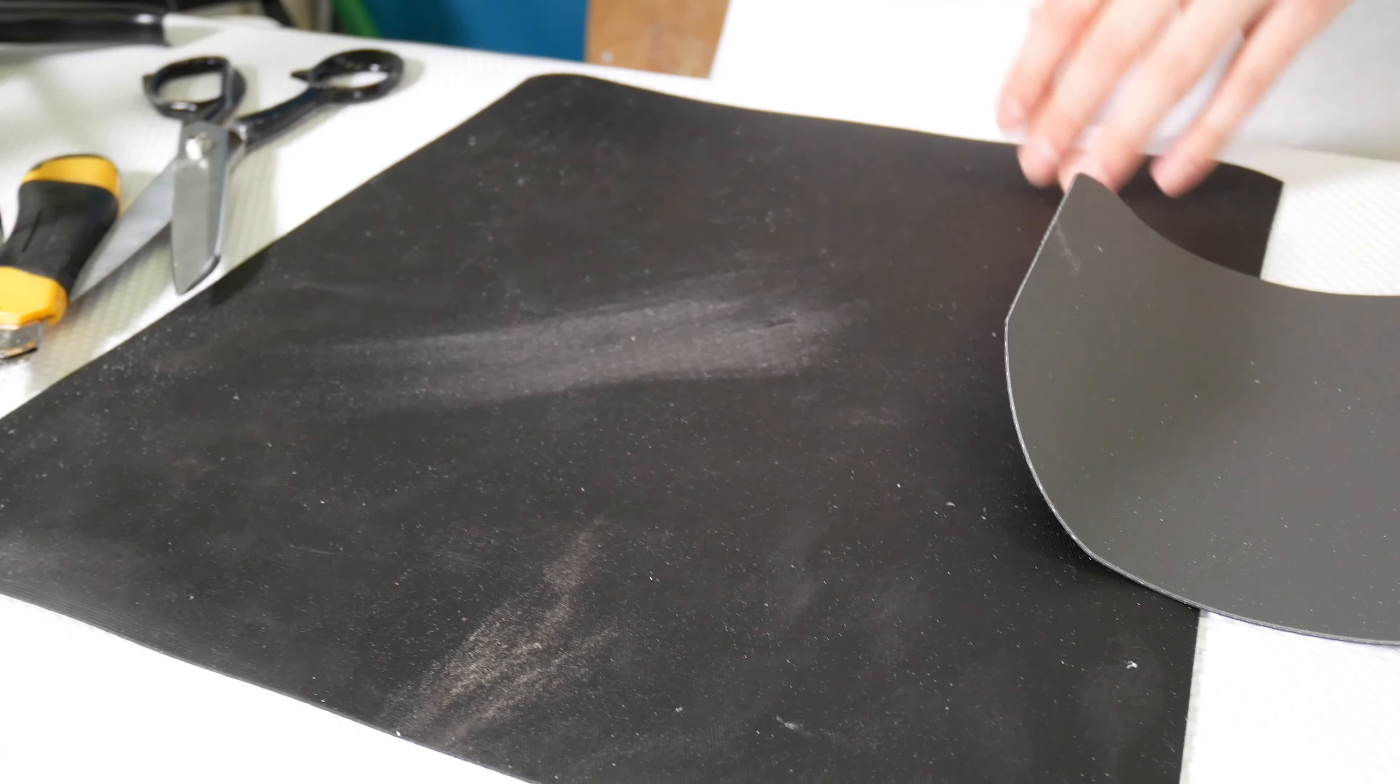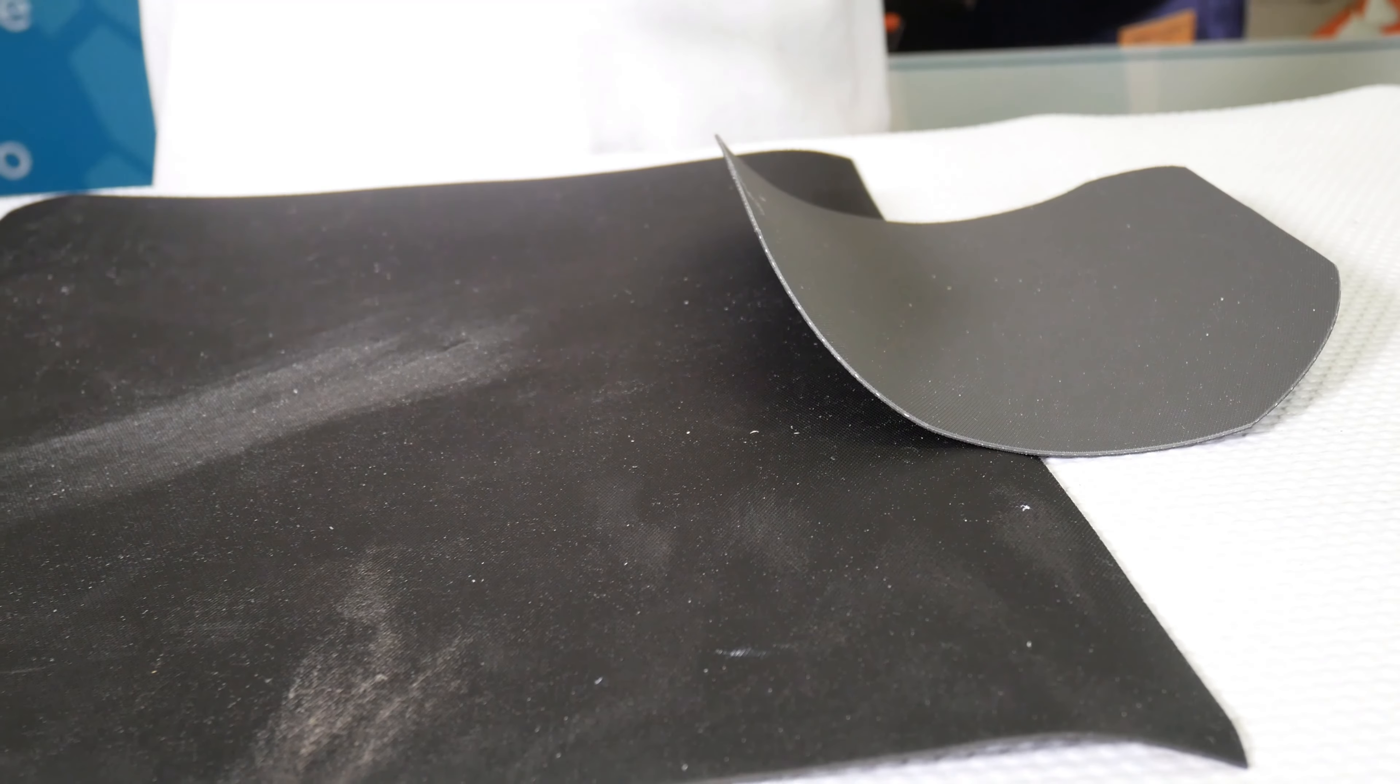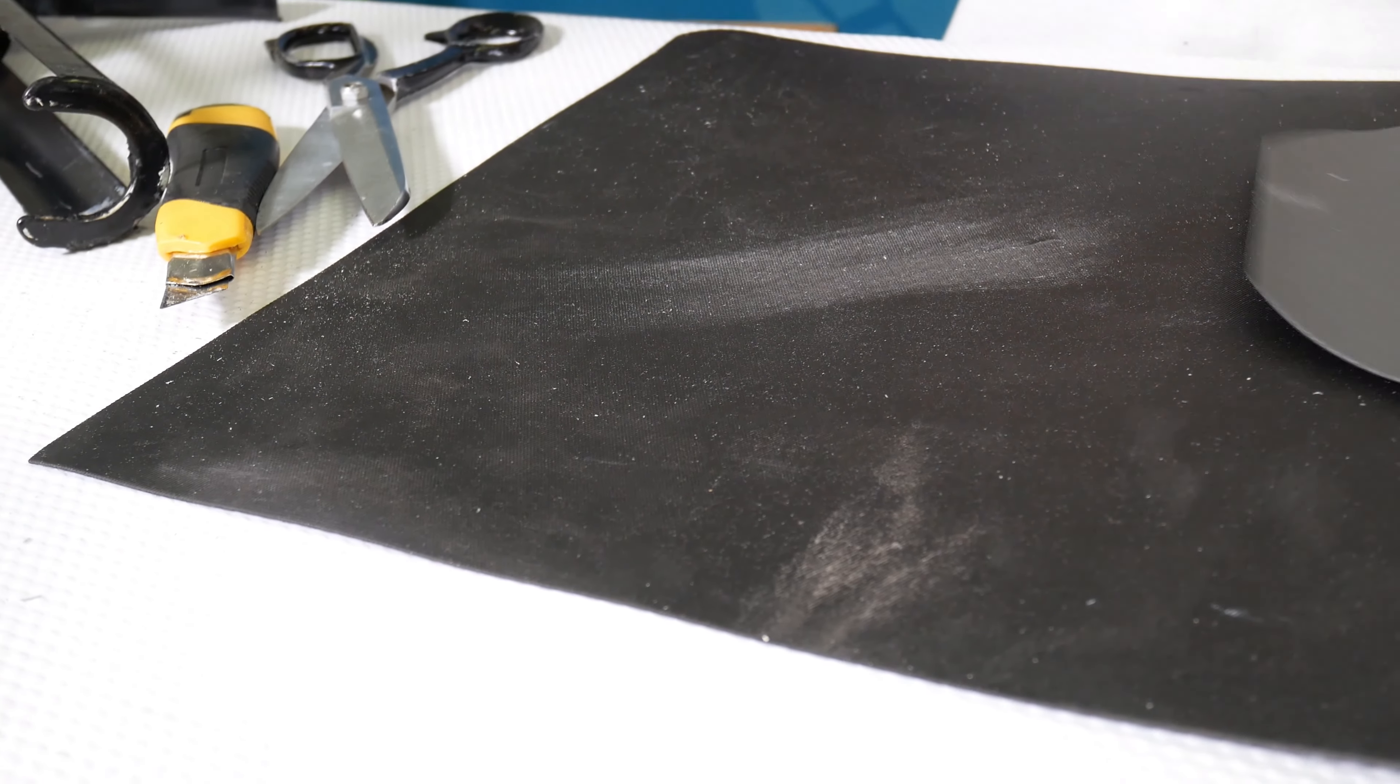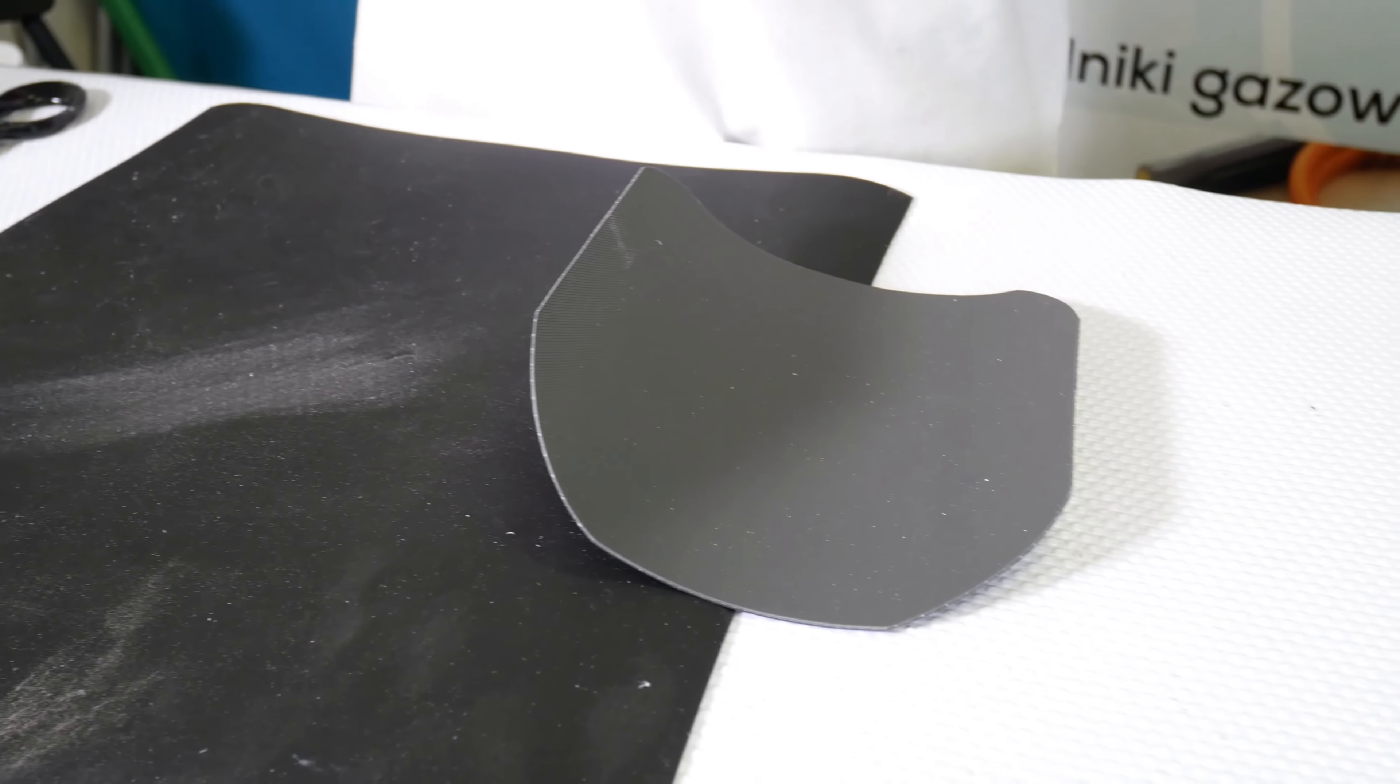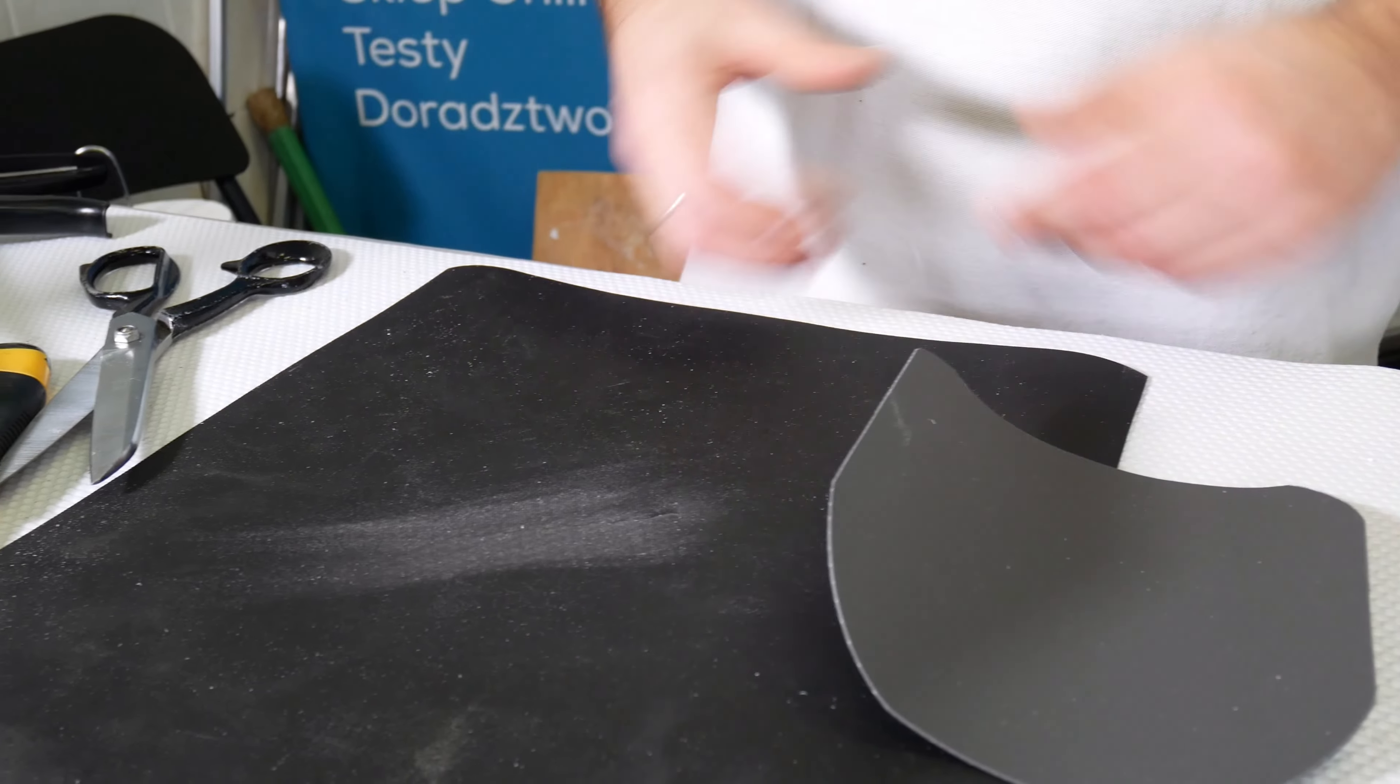It's called modified EPDM, although it's not exactly modified EPDM because modified EPDM are membranes that you mainly glue. You can't weld it because EPDM is an artificial rubber that we actually vulcanize. It must be information that it is a weldable membrane.